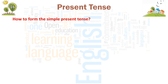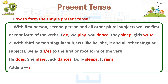How to form the simple present tense? 1. With first person, second person, and all other plural subjects, we use the first or root form of the verb: I do, we play, you dance, they sleep, girls write. 2. With third person singular subjects like he, she, it, and all other singular subjects, we add s or es to the first or root form of the verb: he does, she plays, Jack dances, Dolly sleeps, it rains.